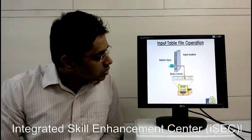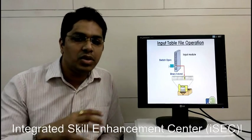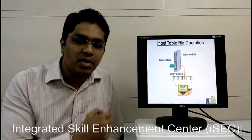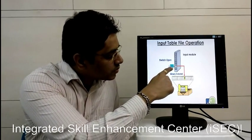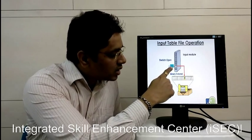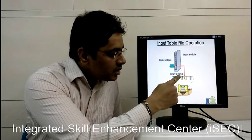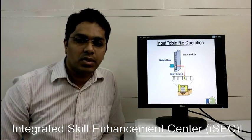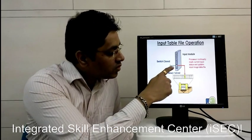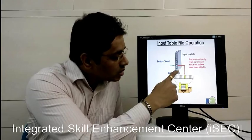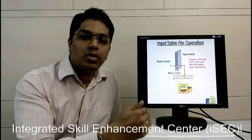Here we have tried to show the representation of the input table file operation, how the PLC will store the input in its table format. Whenever there is an input, we have not given the input over here. This NO contact, normally open, means we have not given the input. Binary 0 is stored in the input table. Whenever we close the input, when we press the switch, binary bit 1 is stored in the input table and it will go to the program.